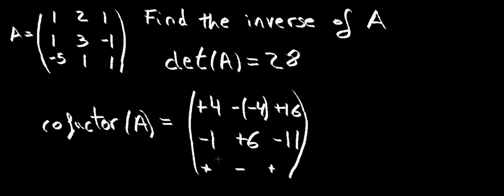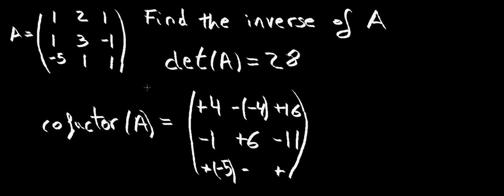We now move to the last row. The minor for this element is going to be this determinant here. 2 times minus 1, minus 1 times 3, that's going to be minus 5. It goes in here — we had a plus, but our value inside the bracket is minus 5. We move to the second element on the third row. Anything not on this row, not on this column, is going to be these two values here and these two values here. 1 times minus 1, minus 1 times 1, that is going to give us a minus 2. Remember the sign from the sign convention stays there, and we have a minus 2 that is going to become plus 2.